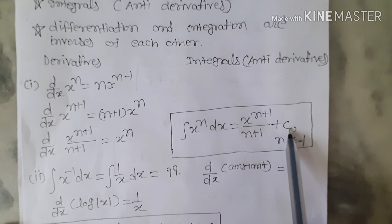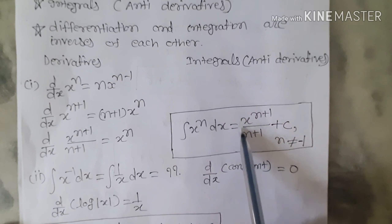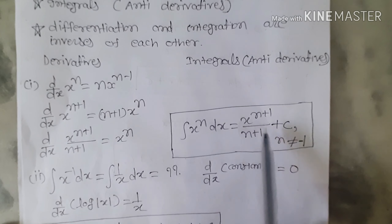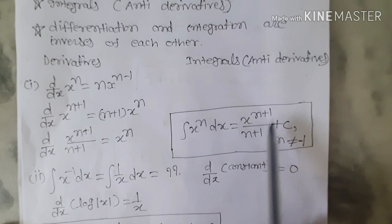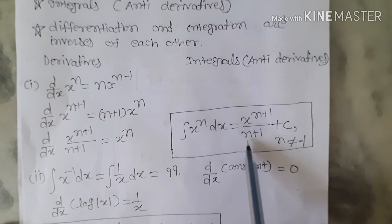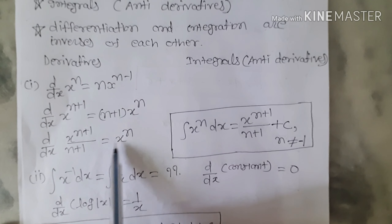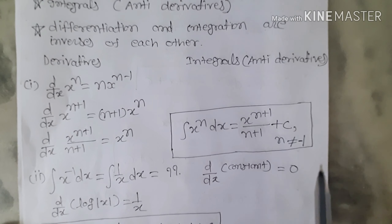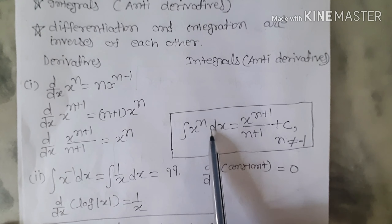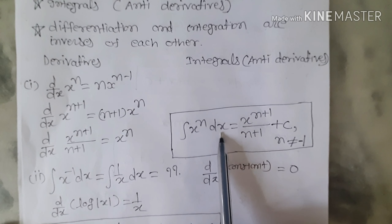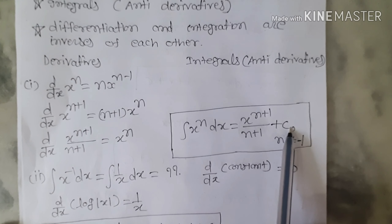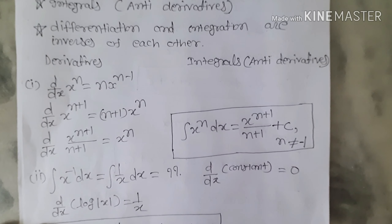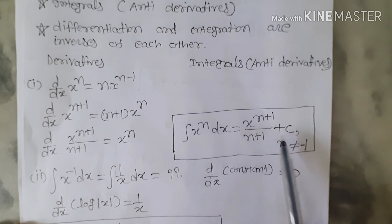We write the constant because when we differentiate the right-hand side, d/dx of x^(n+1)/(n+1) gives x^n, and d/dx of the constant gives 0. So you get x^n only. In each integration formula we write plus c.